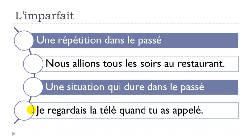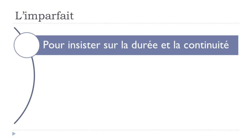If you want to say something that lasts — durée — in the past, you also use l'imparfait. This example shows the difference between imparfait and passé composé: 'je regardais la télé' uses imparfait because watching TV lasts a while. Then 'quand tu as appelé' — 'appeler' means to call — uses passé composé because it's a single action. So: 'je regardais la télé quand tu as appelé'.